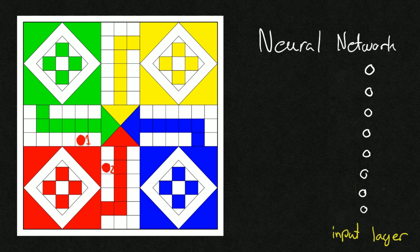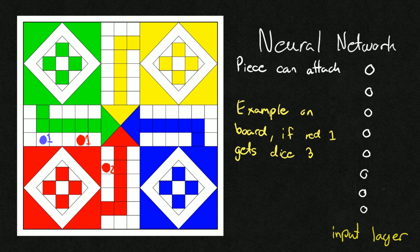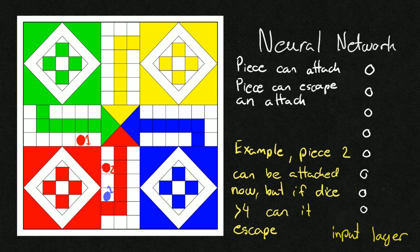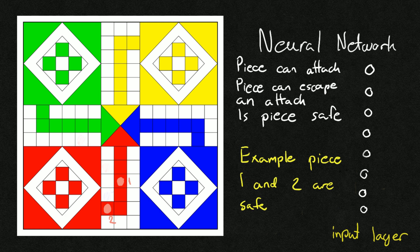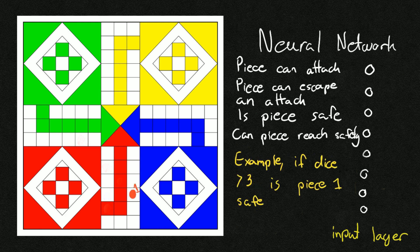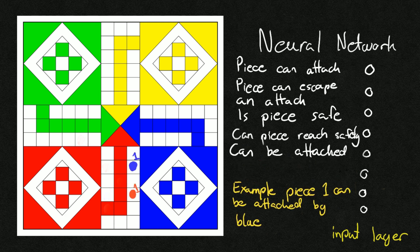I chose to change it to eight inputs: whether or not with the current dice the piece we are looking at can attack an enemy; whether or not it can escape an enemy if the enemy is within six spots and able to attack; whether or not the piece is safe by, for example, being in the start or being in the end area; if a piece is able to reach safety; if it can be attacked; if it is within six spots of another one.